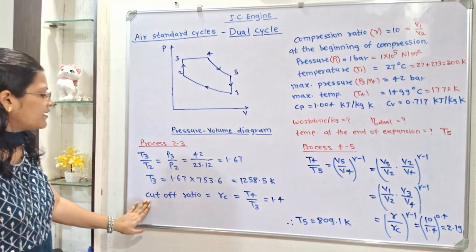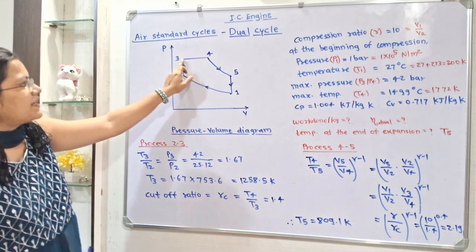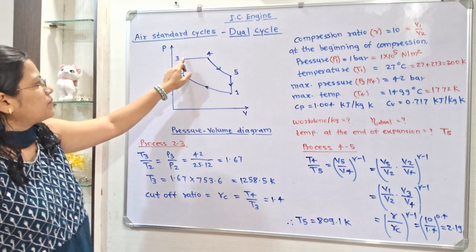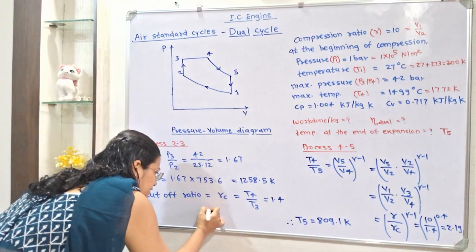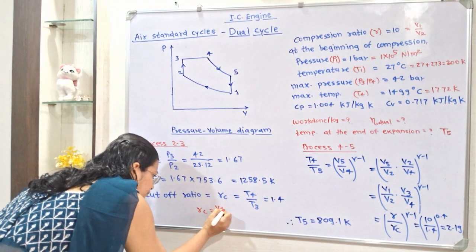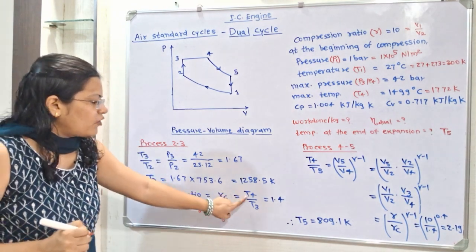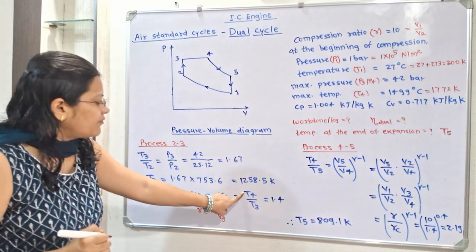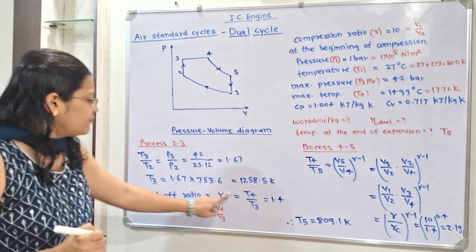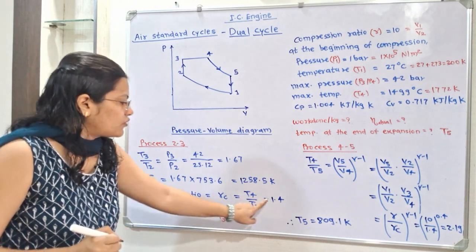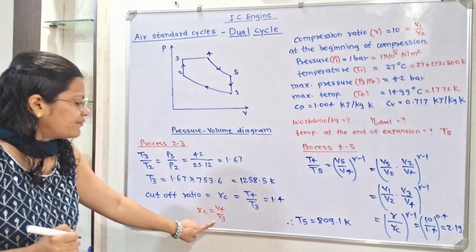Now we find the cutoff ratio. The cutoff ratio Rc = T4/T3, which is also equal to V4/V3. Since T4 = 1772 K and T3 = 1258.5 K, the cutoff ratio Rc = 1772/1258.5 = 1.4. This is also equal to V4/V3.